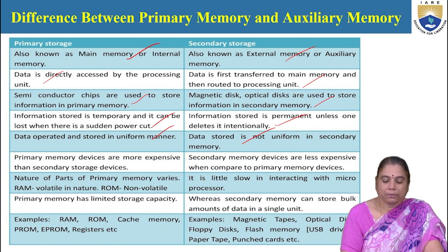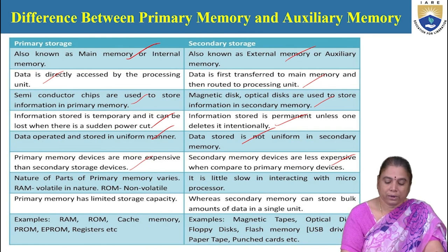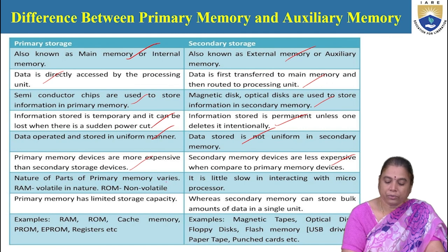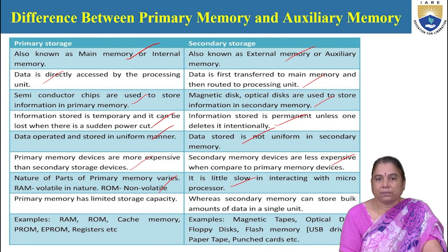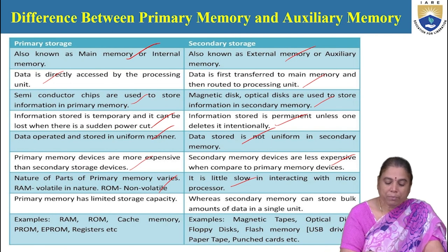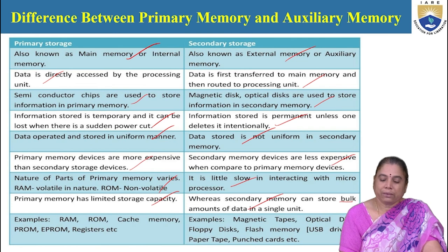Primary memory devices are more expensive than secondary storage devices, which are less expensive. The storage capacity is also high in case of secondary storage. RAM in primary memory is volatile; ROM is non-volatile. The access speed is lower for secondary storage devices. Primary memory has limited storage capacity, but secondary memory can store bulk amounts of data on a single unit, having tremendous storage capacity.